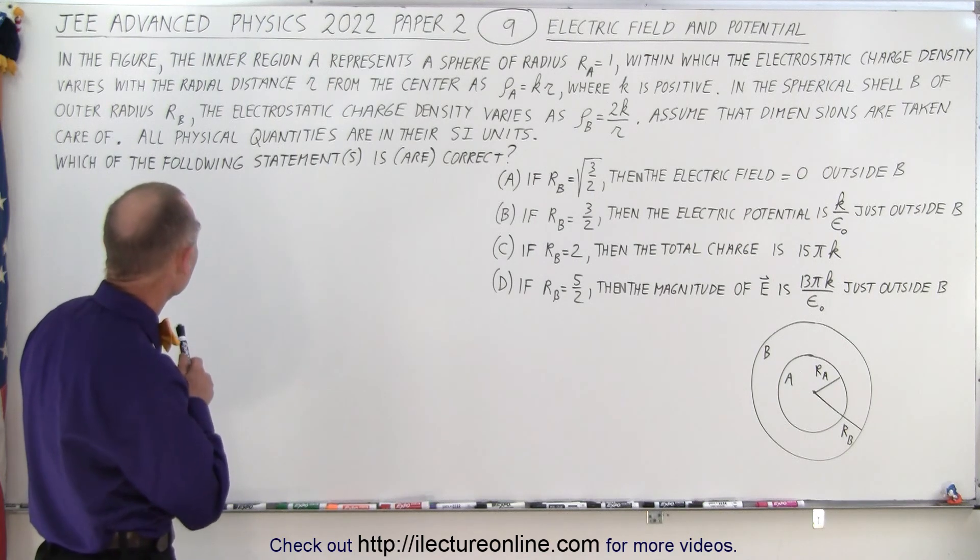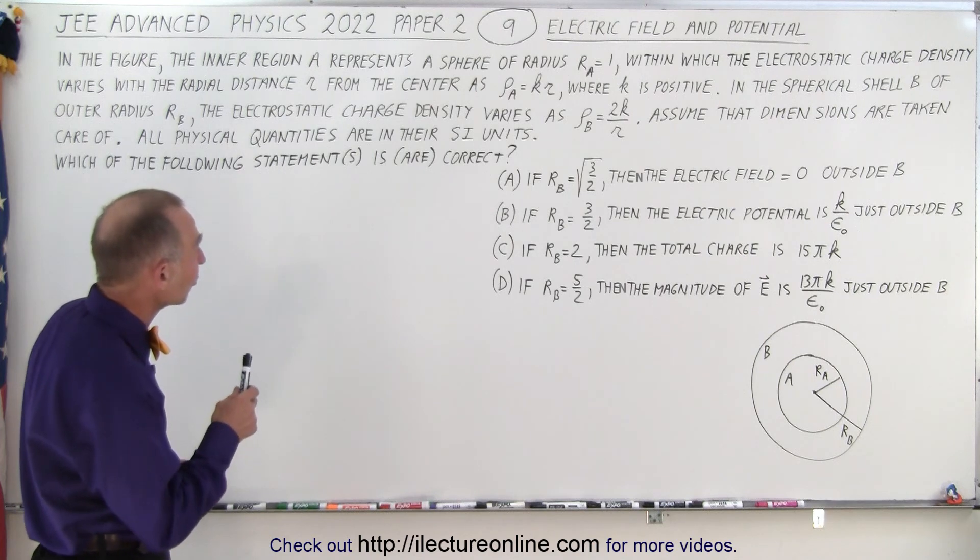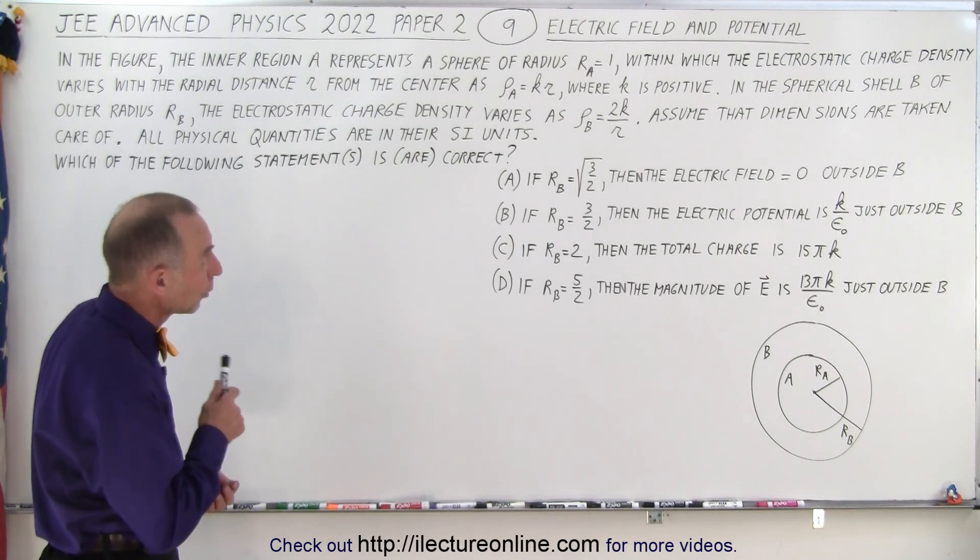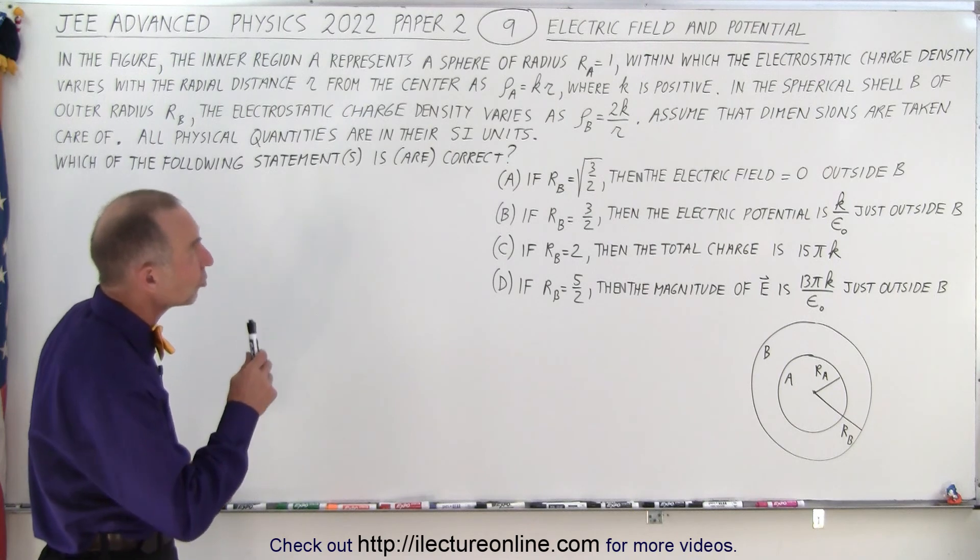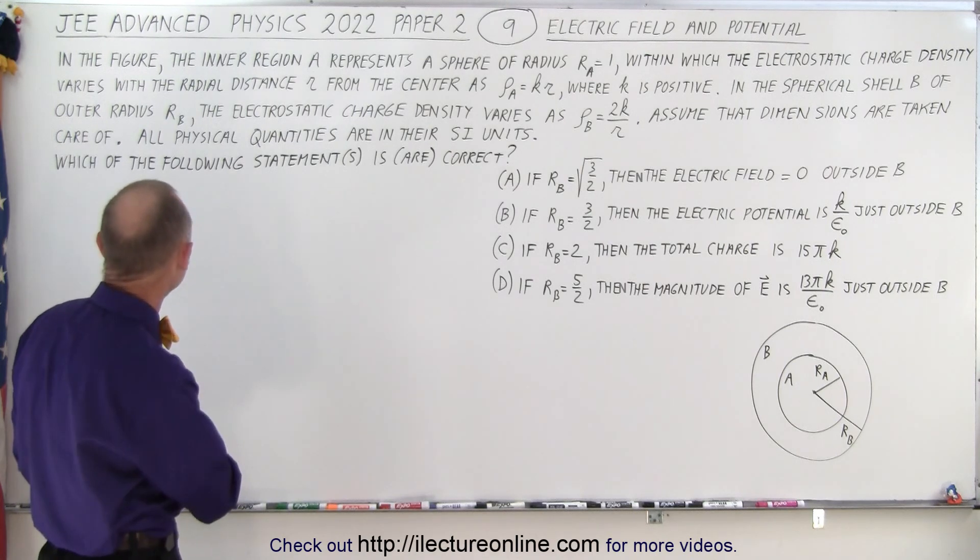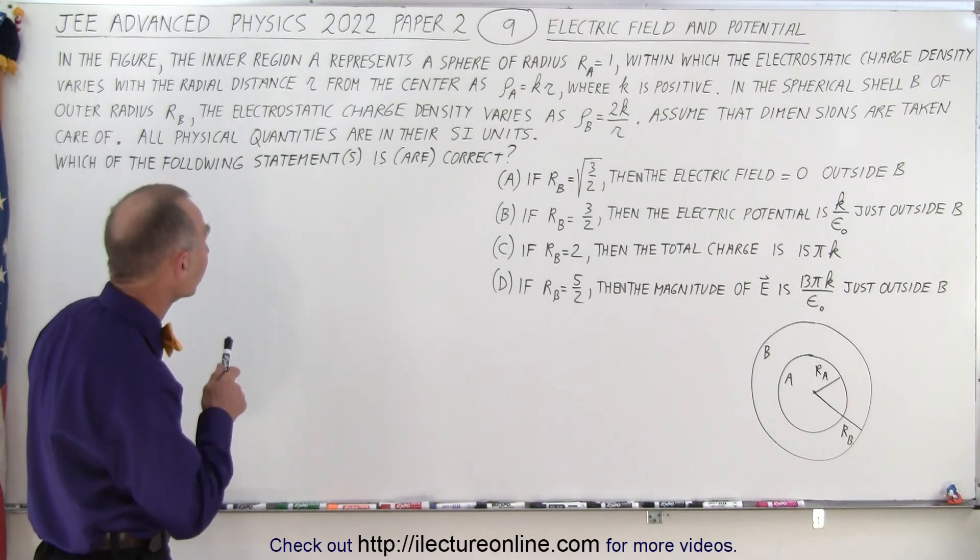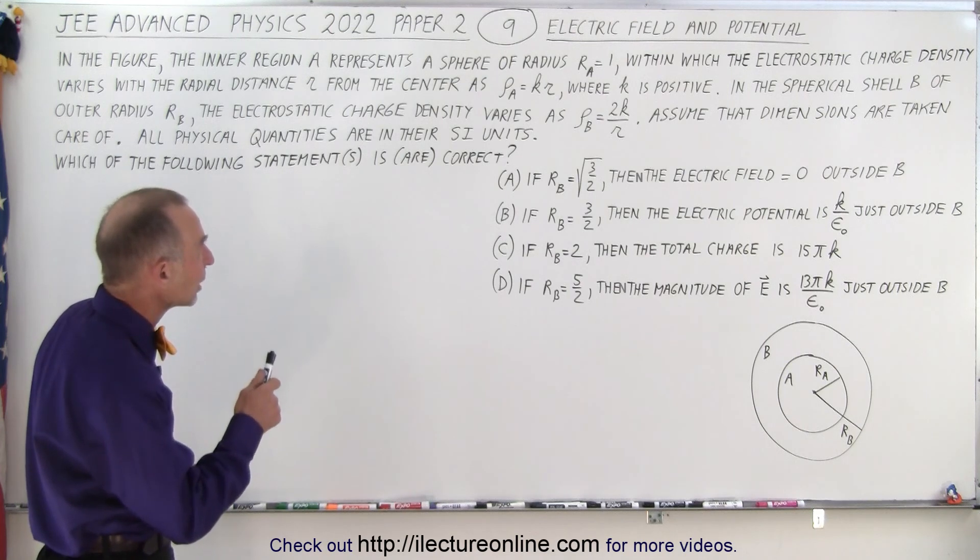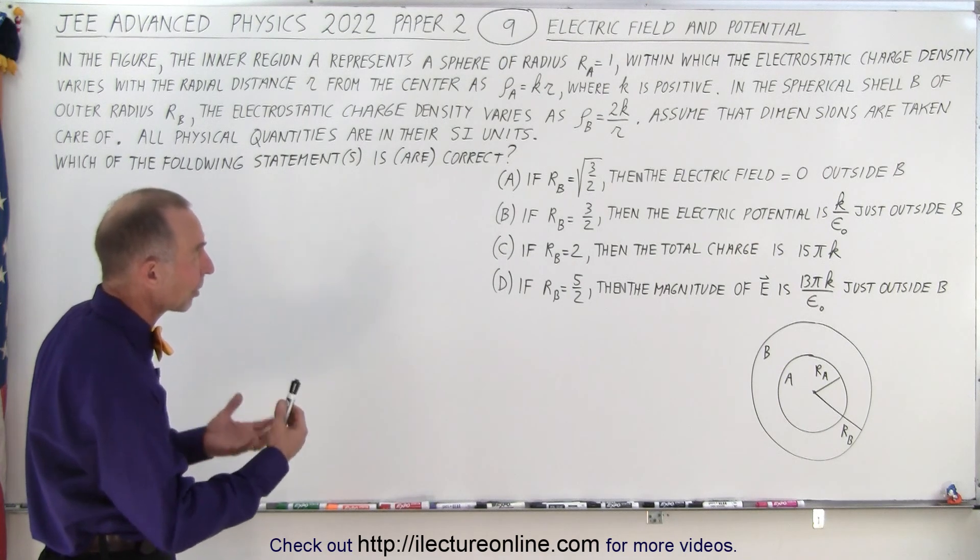It says, in the figure, the inner region A represents a sphere of radius Ra equals 1 within which the electrostatic charge density varies with the radial distance R from the center as the density equals k times R, where k is a positive number.